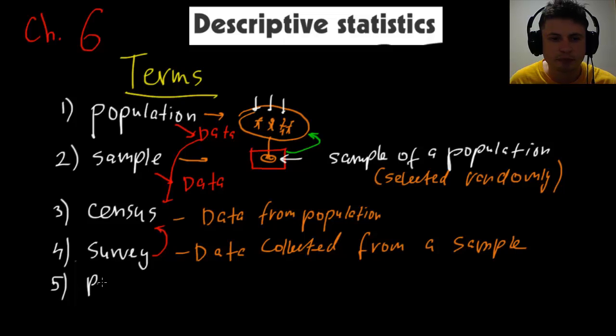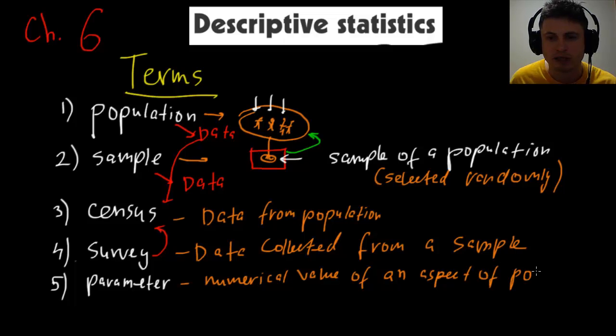Another term here is parameter. And parameter has the word meter in it, so it means it measures something. And what it measures is, this is basically a numerical value, a numerical measurement value of something in a population, of a population, or actually of some aspect, of an aspect of population. So in our case, we're talking about hours of sleep. So numerical value of four hours that someone in our school got asleep last night, this will be a parameter in our population.